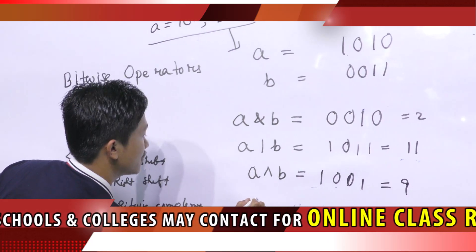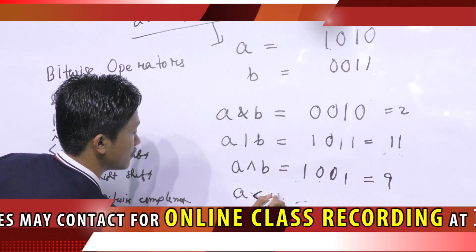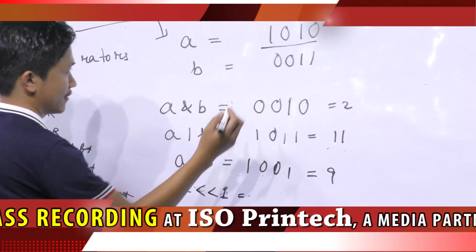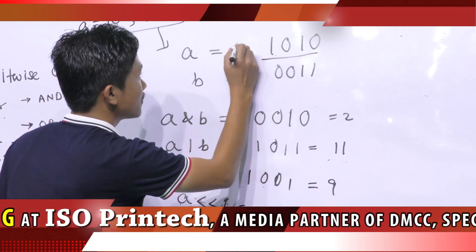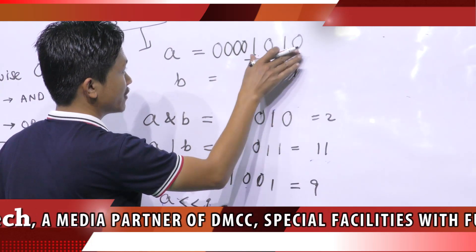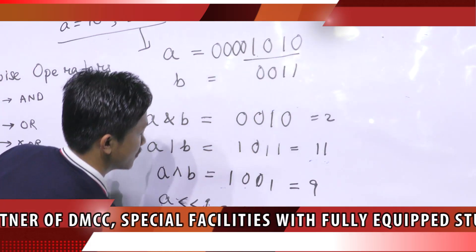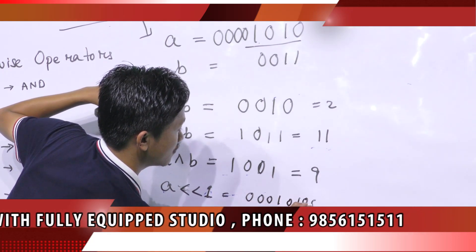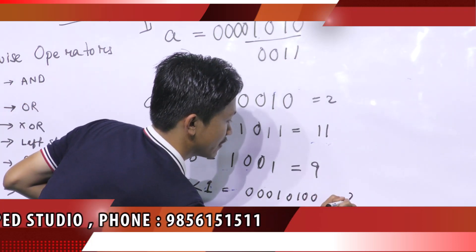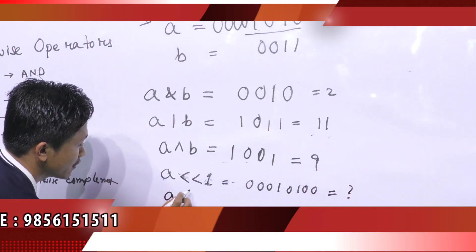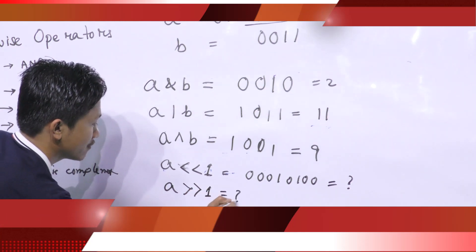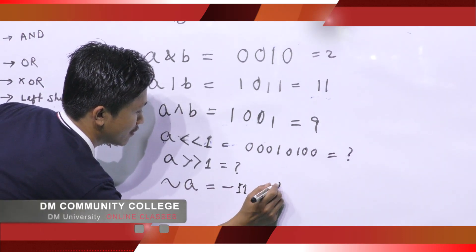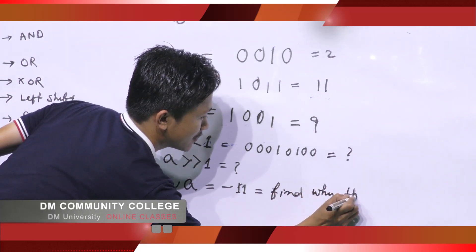Next is the left shift operator. This means shift the bits of A by 1 to the left. So if A is 1010, shifting left gives 00010100. Find the decimal equivalent from that. You also have to find the complement, which will return minus 11 — find out why this is minus 11.